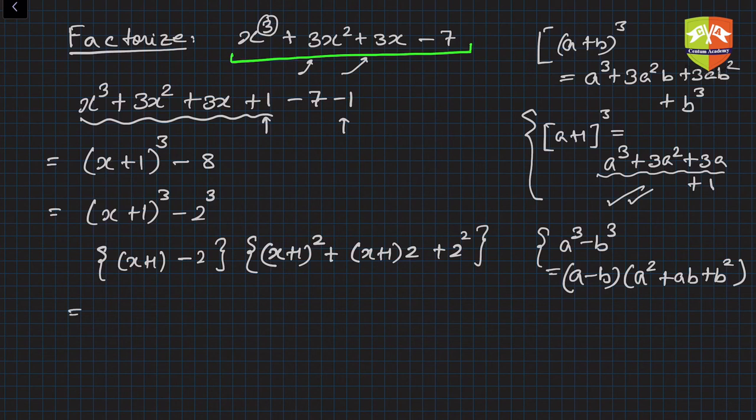And then this is going to help us in factorization. So (x + 1) - 2 is simply (x - 1). And here, open up the bracket: x² + 2x + 1, then 2x + 2, and then +4.